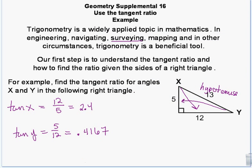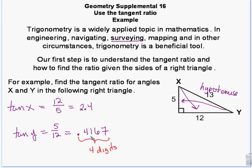I'm going to call it 0.4167. Typically, when we're talking about trig we round to four digits. Here we only had two digits so it didn't matter, but when you have a long string of decimals, round to four. The big trig table books are four digits, sometimes six.